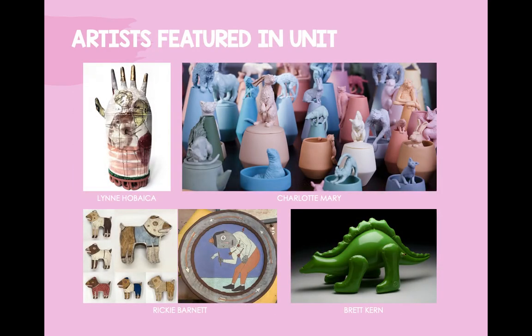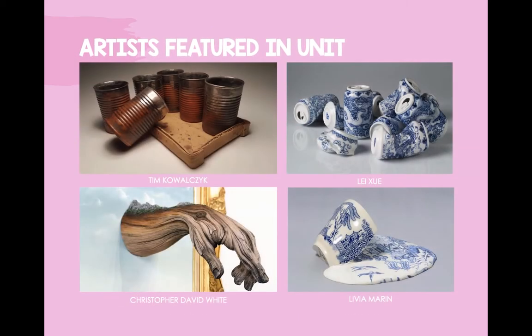Some of the artists that I will include in the presentations are Lynn Hovayka, who makes beautifully sculptural functional objects; Charlotte Mary, who combines form and function with her species series of lidded jars; Ricky Barnett, who adds carved detailed images to functional and non-functional objects; Brett Kern, who creates illusionistic ceramic objects that look like balloon animals; Tim Kolosik, who explores an illusionistic trompe l'oeil approach by creating utilitarian forms that mimic discarded materials such as cardboard or tin cans, like this set of tin can mugs on a ceramic tray that looks like cardboard; Lei Xu, who implies function in her non-functional porcelain cans with painted images from the Ming Dynasty; Christopher David White, who creates purely sculptural objects that mimic and recreate natural textures; and Livia Martin, who obliterates function in her surrealistic melting cups.